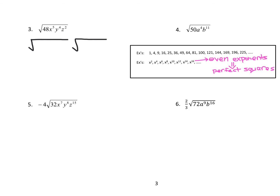48 is not on our list. So we want to find the biggest number that divides evenly into 48 that is a perfect square. Let's work our way down the list — 16 works. 48 divided by 16 is 3. So I'm going to put the 16 in my perfect square radical and the 3 in the leftover radical. This is the biggest perfect square on our list that divides evenly into 48. Note that 4 divides evenly into 48, but that's not our biggest one — we want to get as much out of the radical as we can.